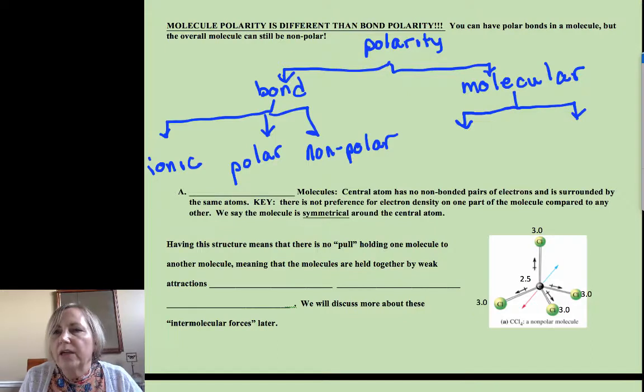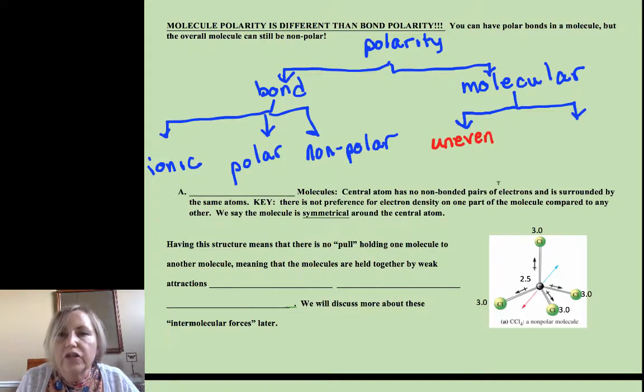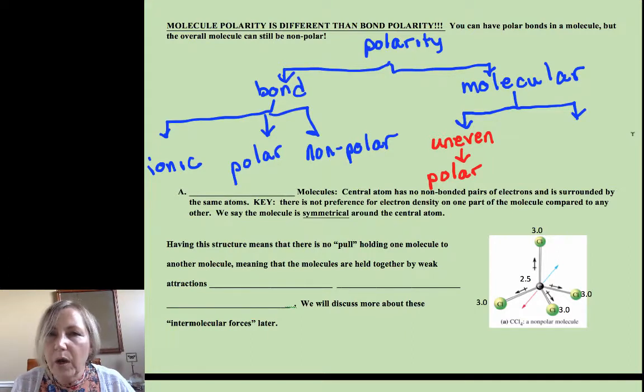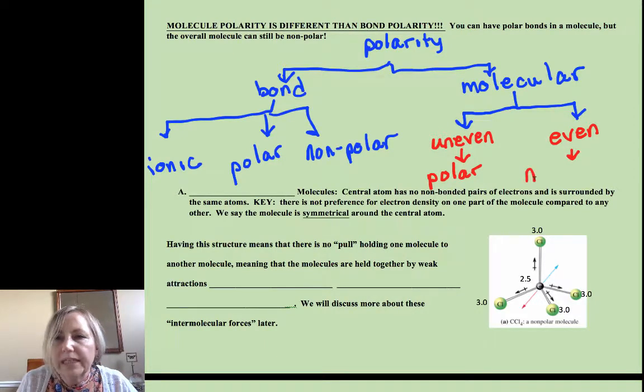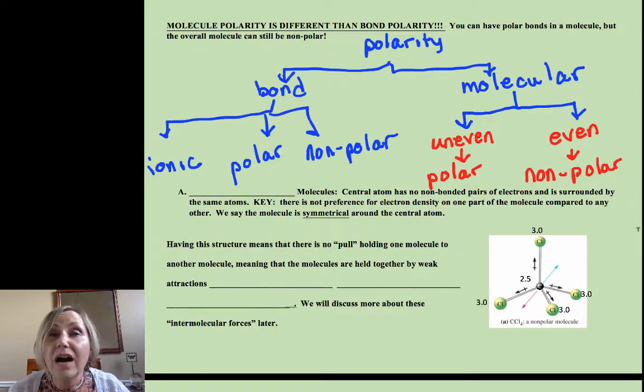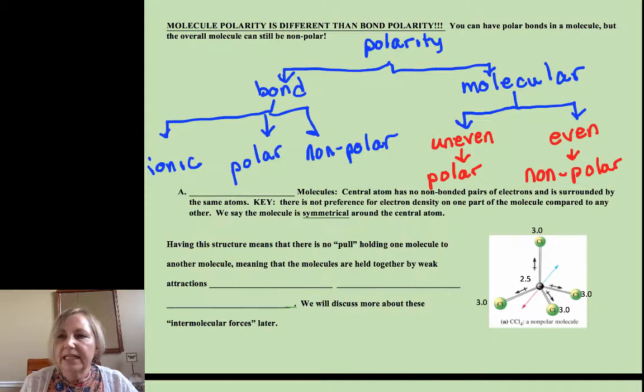But if we get to larger molecules, we're talking about a pole all around a center. So if we have an uneven pole, there's a region where the electron density is higher, we are going to have a polar molecule. So it's possible, and we'll see examples, to have nonpolar bonds but a polar molecule. If we have an even pole on a central atom, we're going to have a nonpolar molecule. So we're going to see examples where you can have polar bonds but a nonpolar molecule, because those polar bonds are distributed evenly around a center.